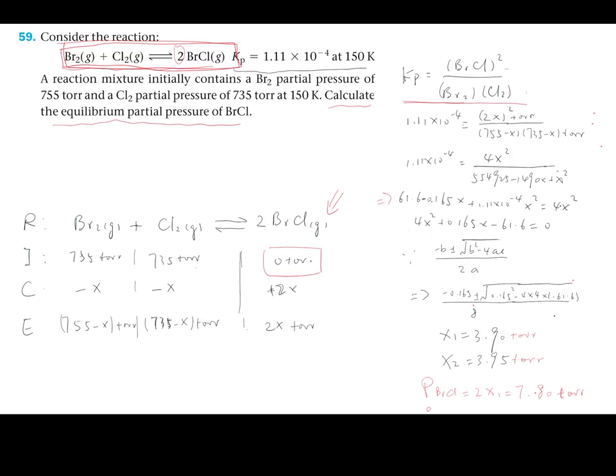Let's first take a look at all the information we have. We have the initial partial pressures of the reagents, and the initial partial pressure of products is zero because we have nothing initially. We also have the equilibrium constant.